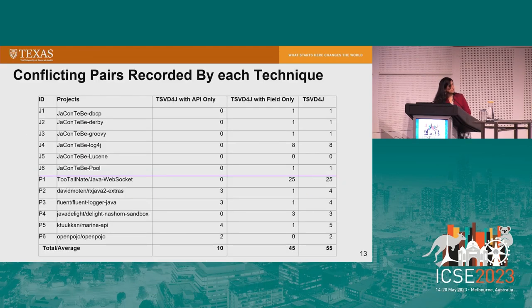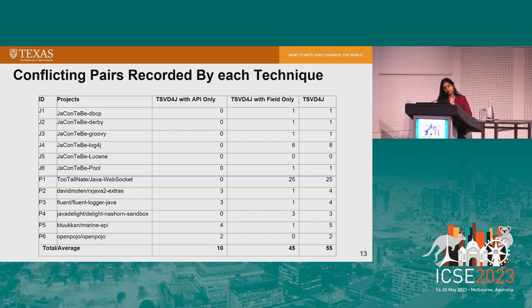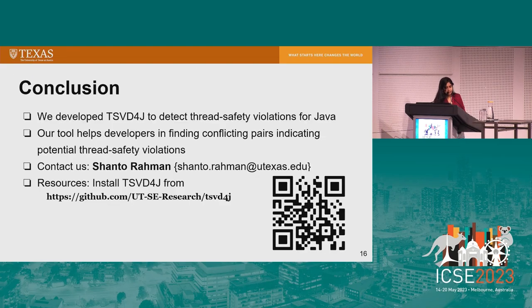We evaluated on 12 open source projects, six taken from a benchmark dataset. TSVD4J found 55 conflicting pairs, and by tracking only field accesses we got 45 conflicting pairs. This shows that tracking fields is very important, at least for Java applications. Our tool is available online.